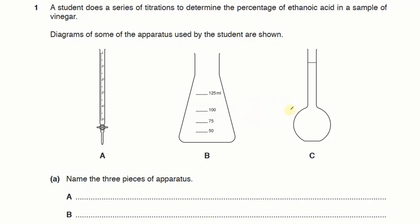Hello everyone, in this video I am going to solve a titration question taken from the ATP P4 O-Level 5070. So let's begin. It says a student does a series of titrations to determine the percentage of ethanoic acid in a sample of vinegar.